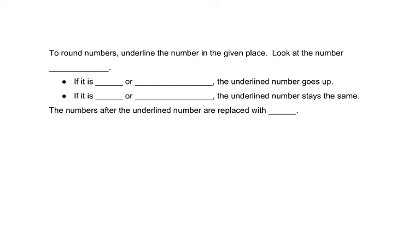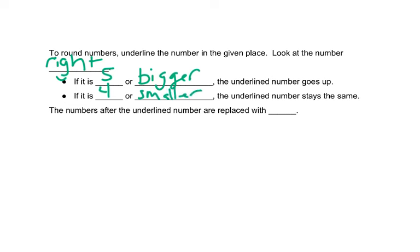To round numbers, we underline the digit in whatever place they want us to round to, and then we look at the number to the right of it. If it is five or bigger, the underlined number goes up. If it is four or smaller, the underlined number stays the same. All the numbers after the underlined number are replaced with zero.